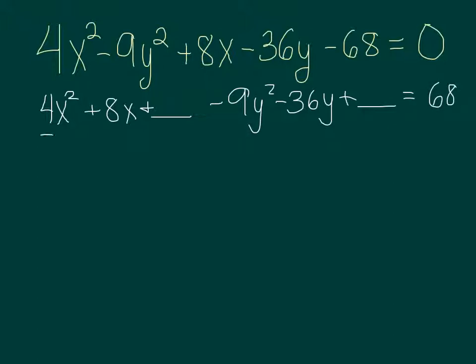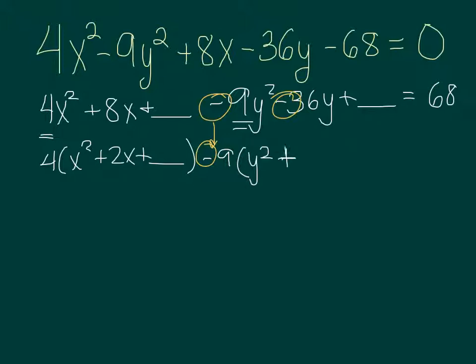Now I need to factor out my leading coefficients on the x squared and the y squared. So I'll have 4 parentheses x squared plus 2x plus blank. Now the negative has to come with the 9 here. So this negative comes out with the 9, which means I have to change the sign on my 36 as well. So I'll have negative 9 parentheses y squared plus 36 divided by 9. So that's 4y plus blank, that still equals 68.